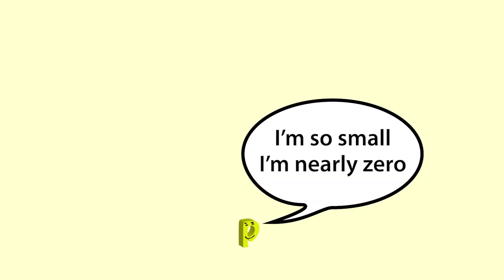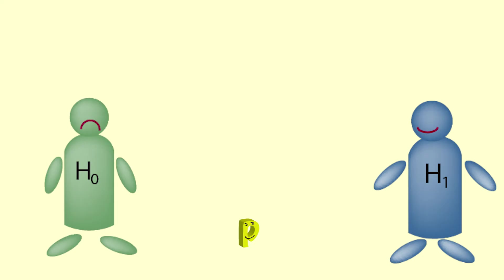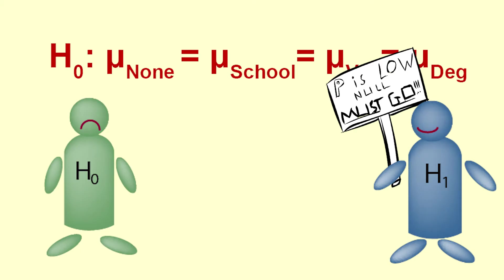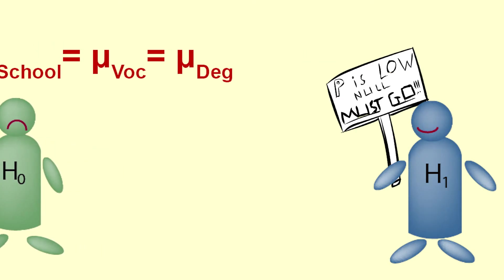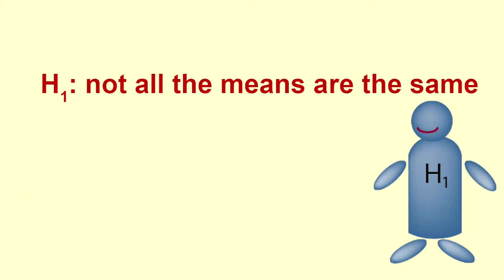This is a very small p-value. In our videos understanding the p-value and understanding hypothesis tests we introduce the idea that p is low, null must go. In this instance we reject the null hypothesis that the means in the population are all the same. We have evidence that at least one of the means is different from one of the other means.